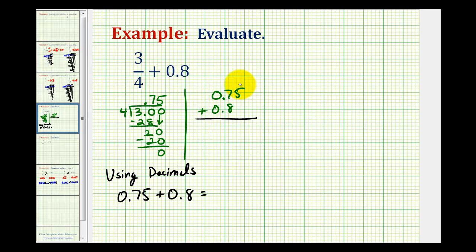If we want to, we could add a zero in the hundredths place value here, bring the decimal point straight down, and then add as we normally do. Five plus zero is five. Seven plus eight is fifteen, carry a one. So we have one point five five, or one and fifty-five hundredths as our sum using decimals.